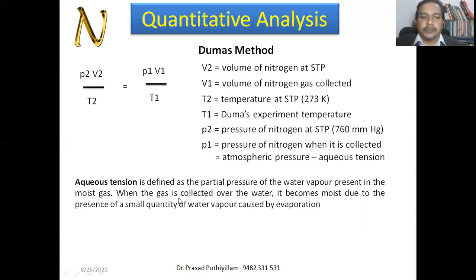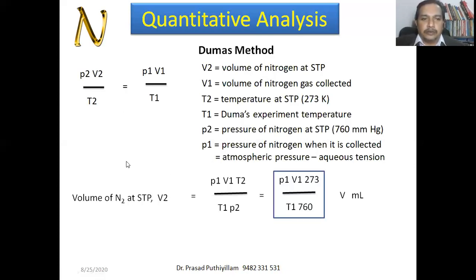Aqueous tension is the partial pressure of water vapor present in the moist gas — since steam is produced, the gas is moist. When gas is collected over water, it becomes moist due to a small quantity of water vapor, which also contributes to pressure. So P₁ = atmospheric pressure − aqueous tension. From this, we calculate V₂ — the volume of nitrogen at STP — as V₂ = P₁V₁T₂ / (T₁ × P₂), where T₂ = 273 K and P₂ = 760 mmHg. Let this calculated volume be V.